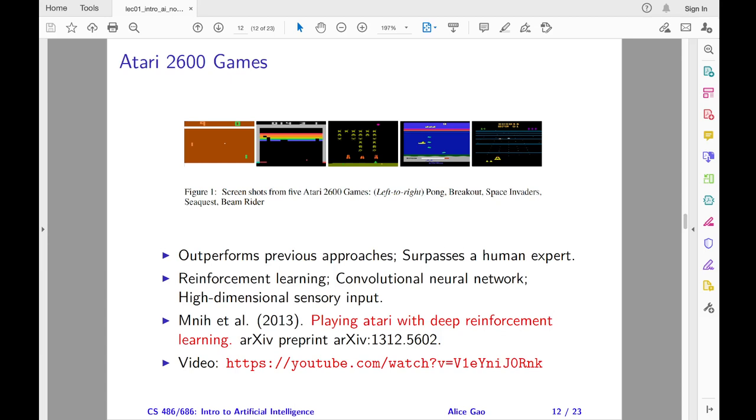The program was tested on seven Atari games. It outperformed all previous reinforcement learning algorithms on six of the seven games. It also surpassed a human expert on three games.